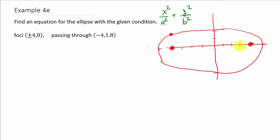We need to find a and b. Remember, the foci are at plus or minus c, 0, so c equals 4. We also know that c squared equals a squared minus b squared. It might look like a tough problem, but let's work through it.